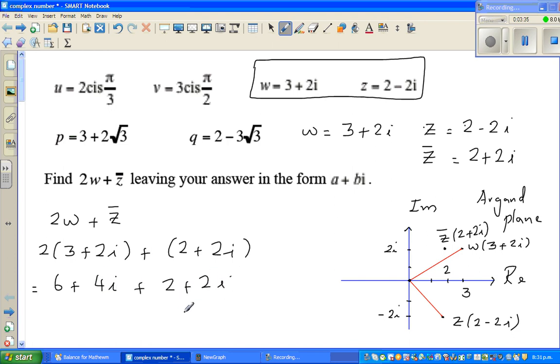Here you have to treat this as simple algebraic expression. So this is 2 times W, your W is 3 plus 2i plus your Z dash is 2 plus 2i. You expand this, so this is 6 plus 4i plus 2 plus 2i. You can add the real part with the real part and the imaginary part with the imaginary part. So this is 6 plus 2 and 4i plus 2i. So the final answer is 8 plus 6i.